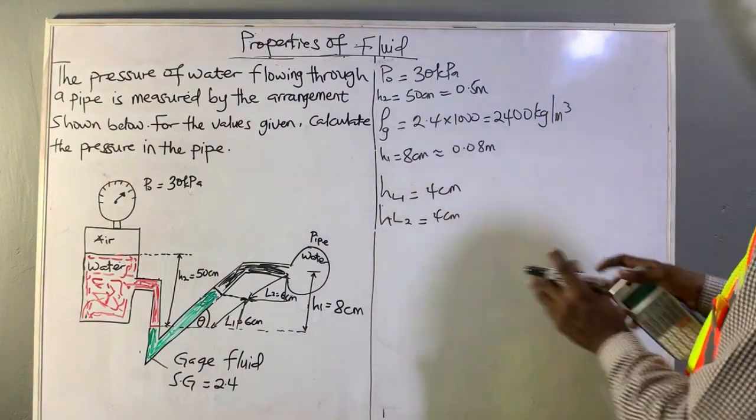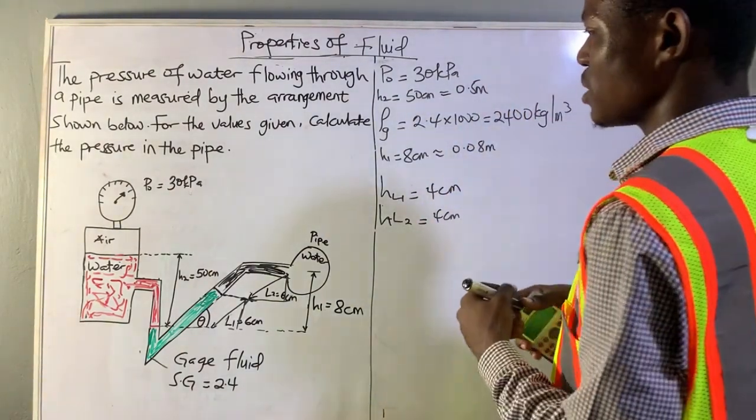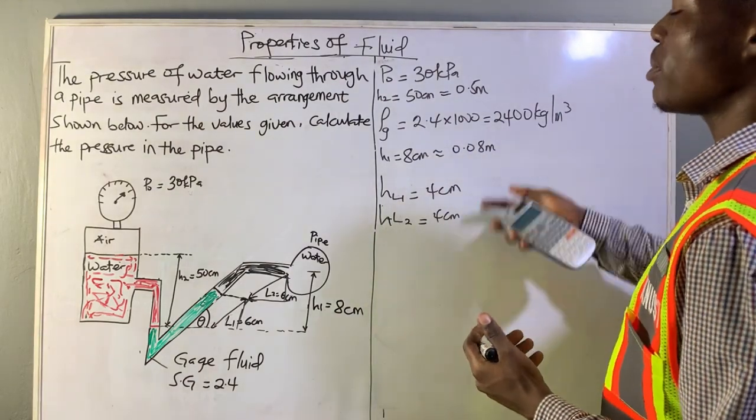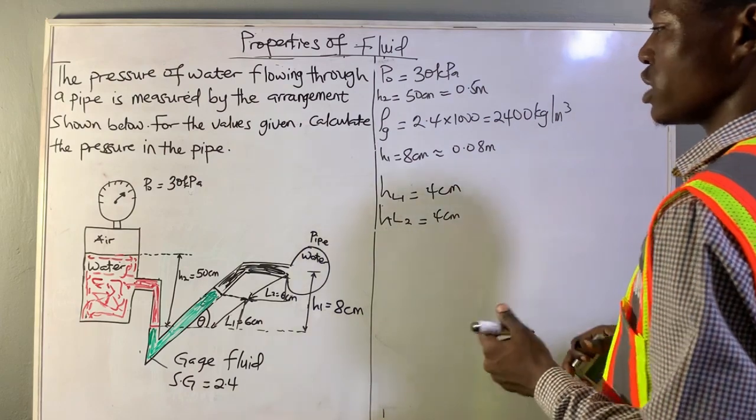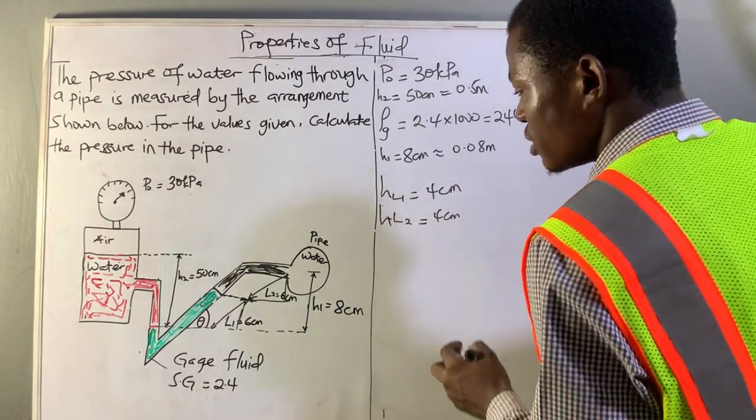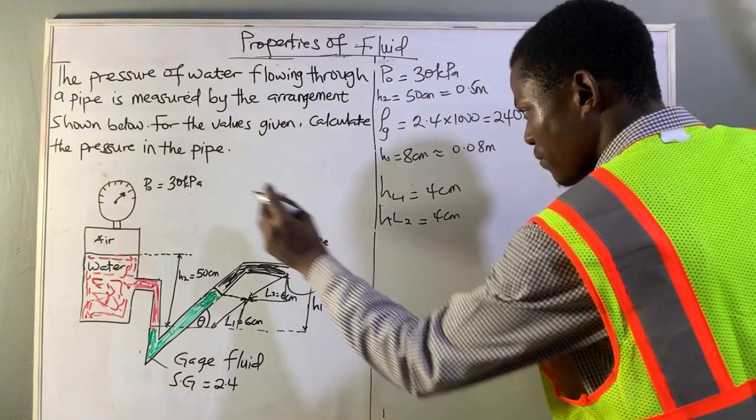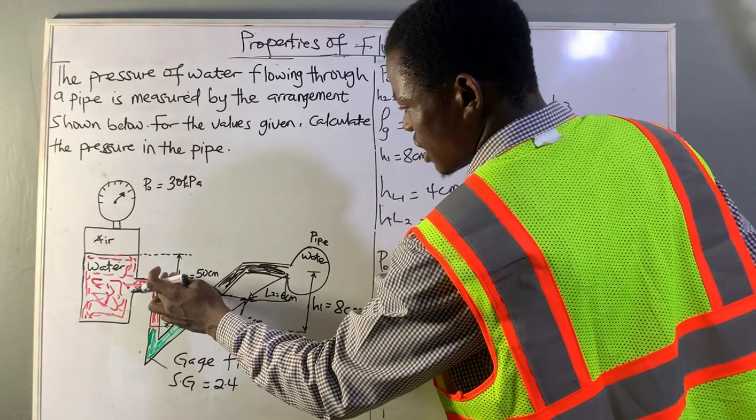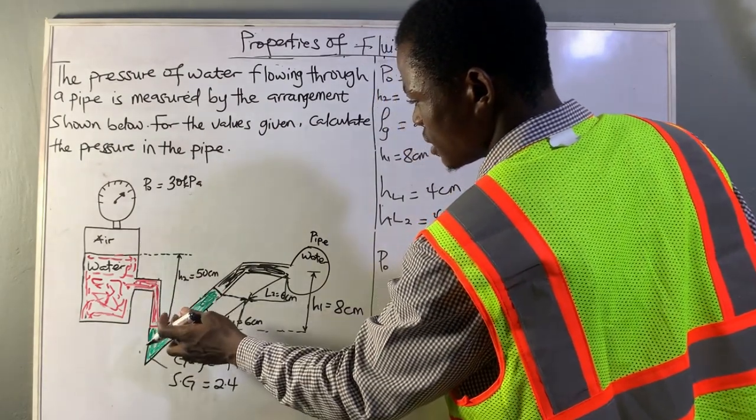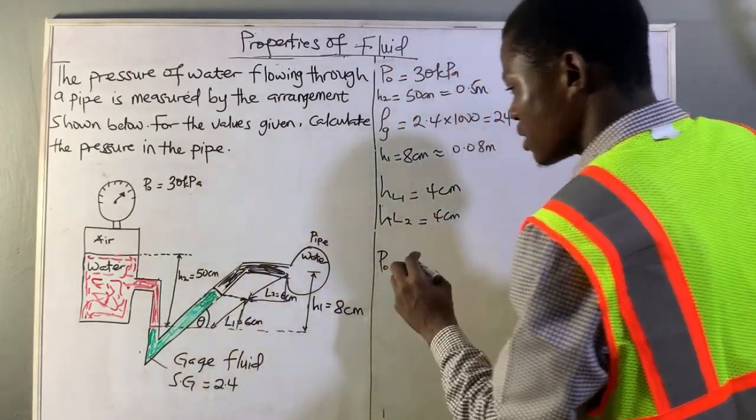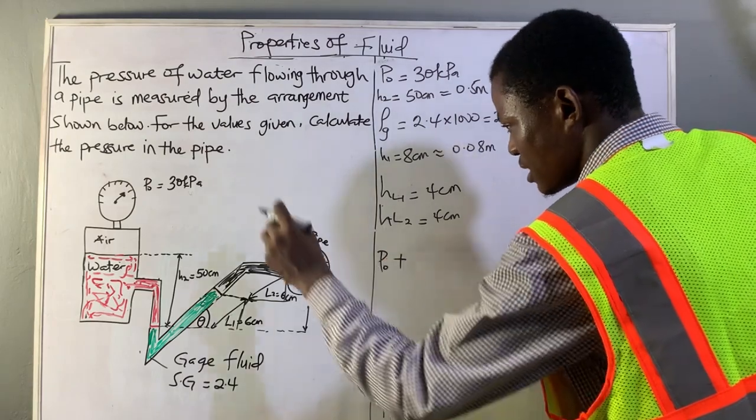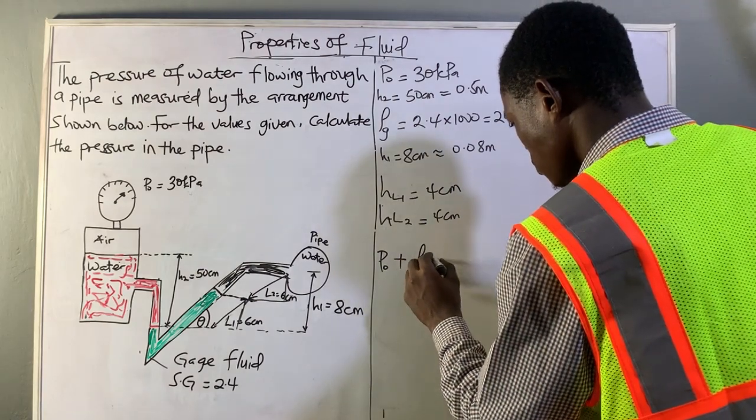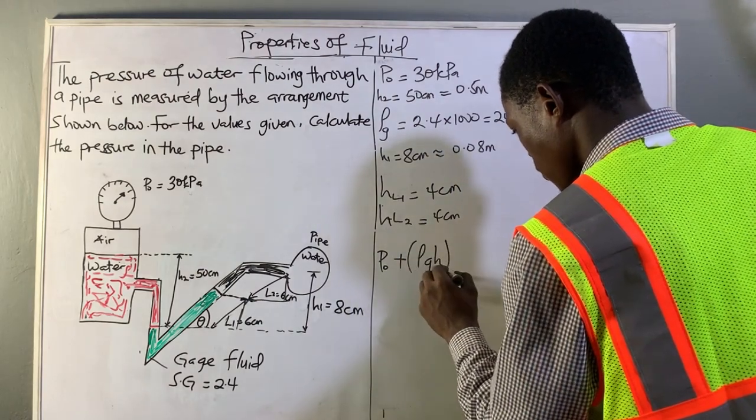Now we have come to write our equation. We are done finding our values, so we can write the equation and input whatever parameters we found into the equation to find the pressure in the pipe. We have P naught, and since the water is coming down 50 cm, let's write the equation: P naught plus, since it's coming down, pressure increases with depth, so we have rho G H of water.